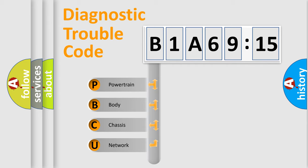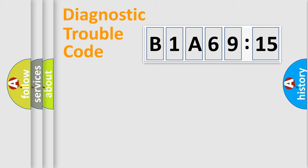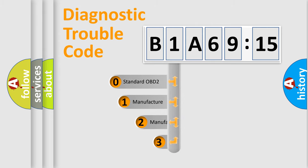We divide the electric system of automobile into four basic units: Powertrain, Body, Chassis, Network. This distribution is defined in the first character code.